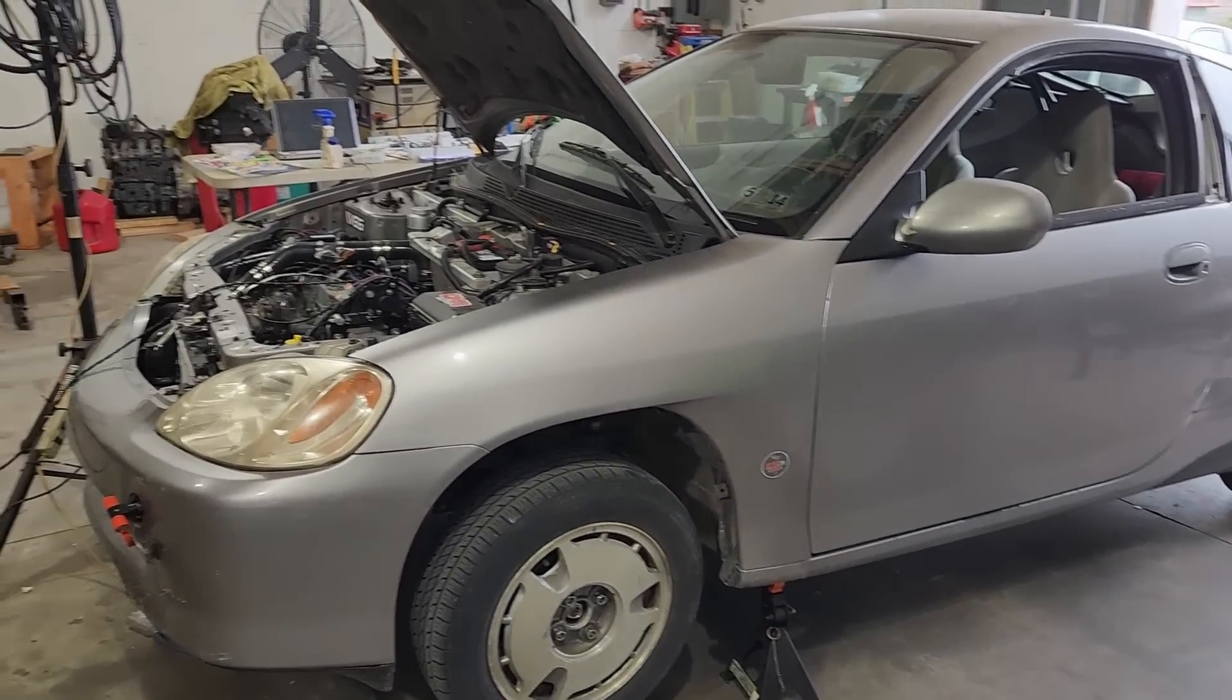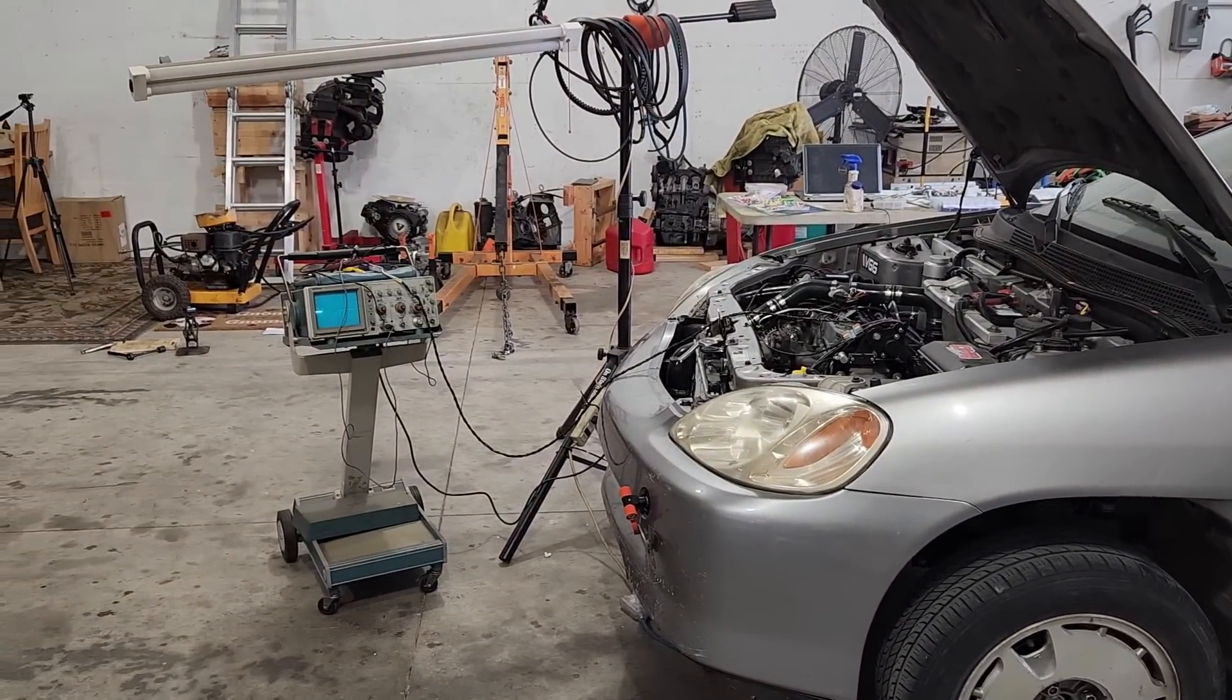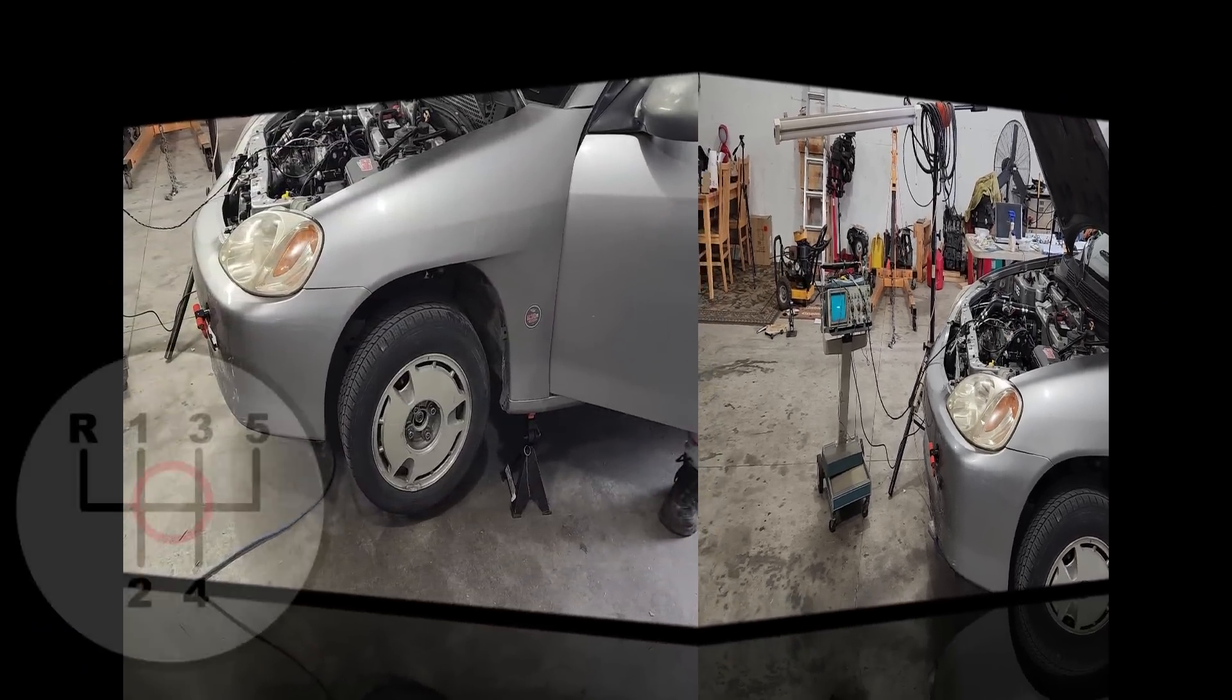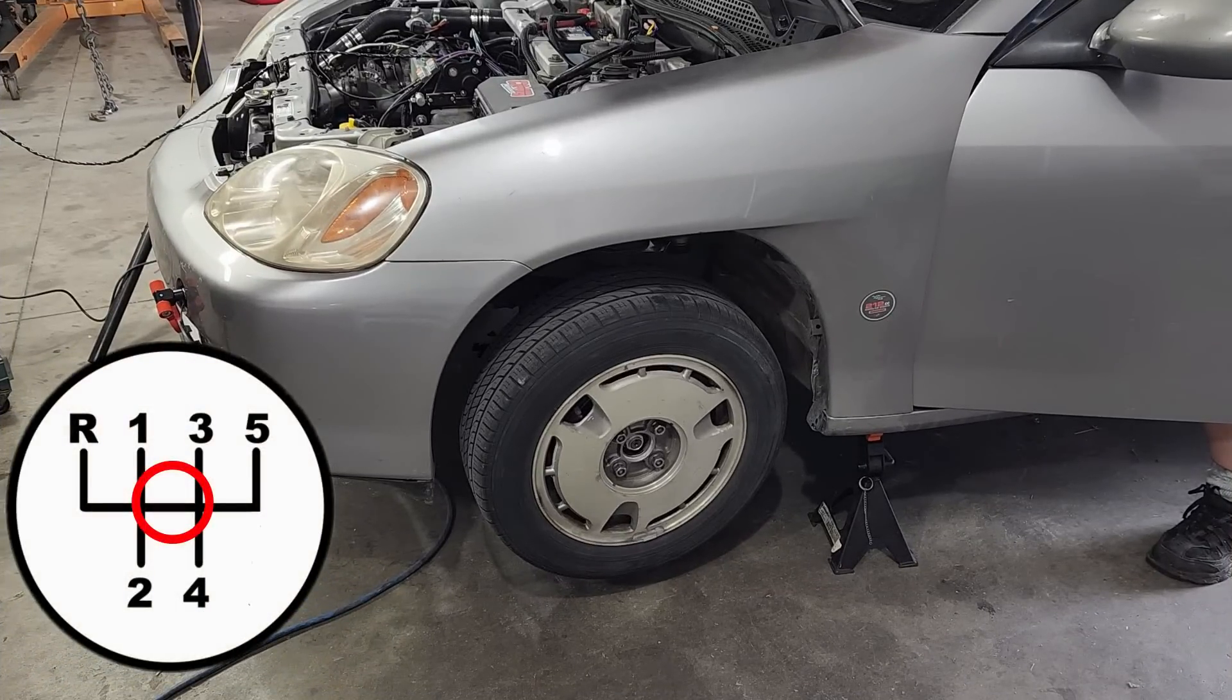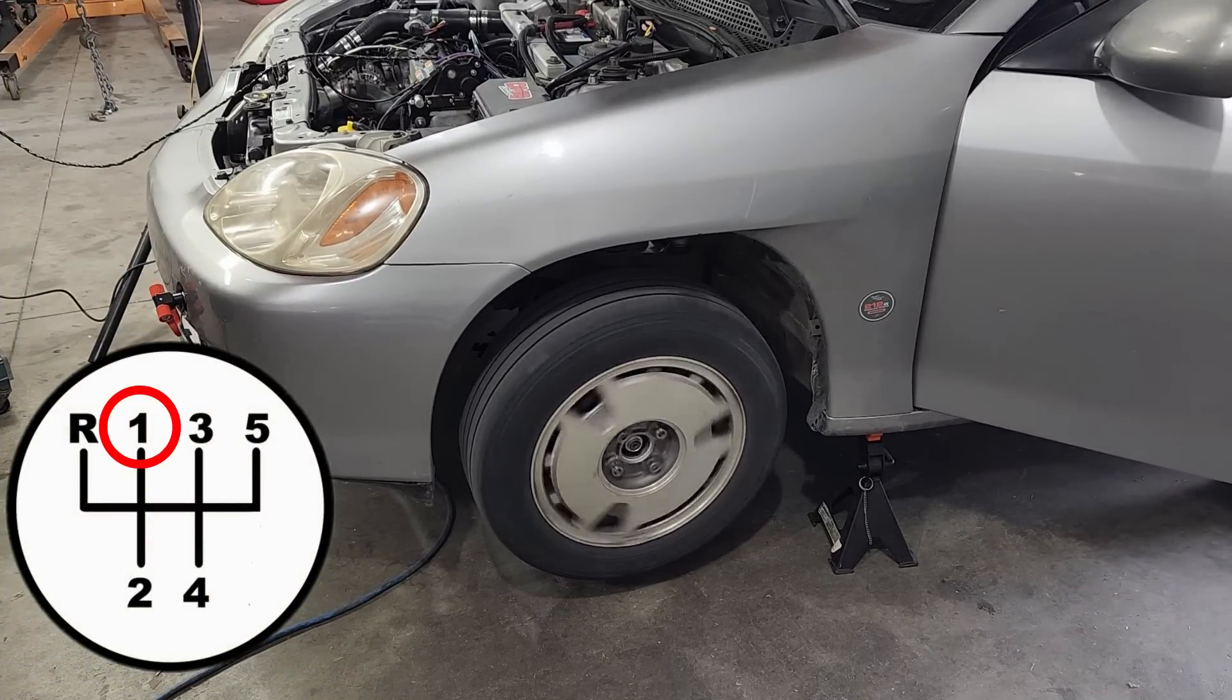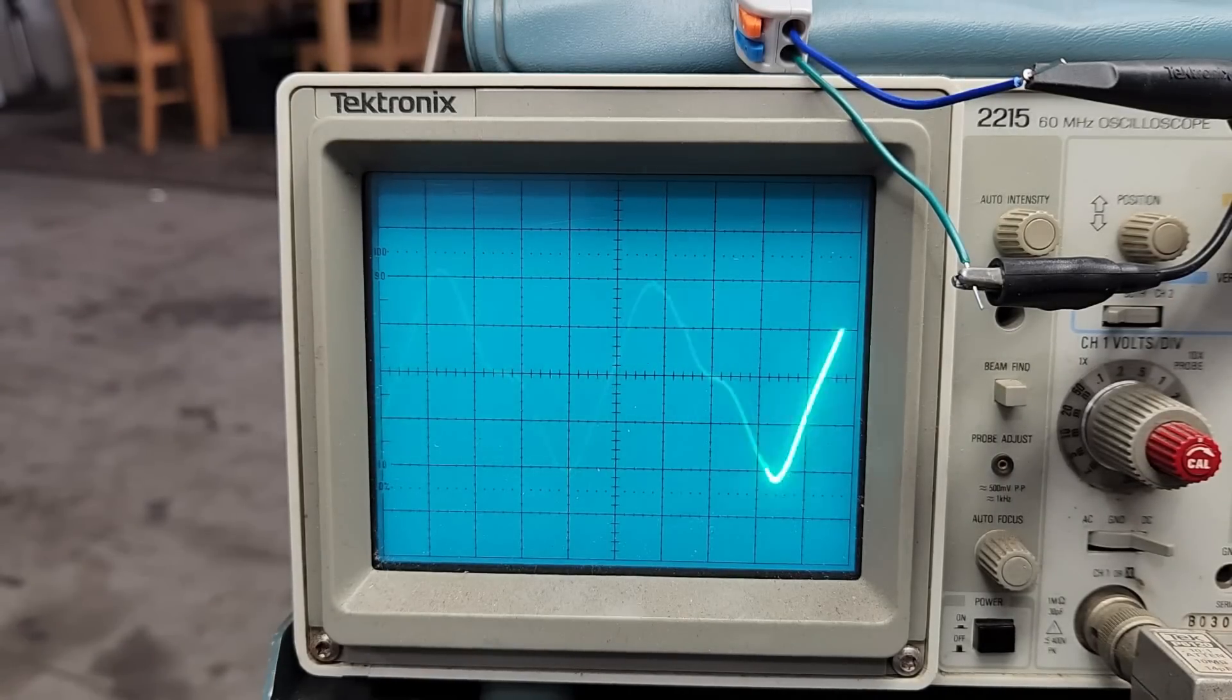So I have the car up on jack stands, and the wires for the vehicle speed sensor have been extended so they reach the oscilloscope. Let's look at the raw signal from the sensor. Yup, the signal from the VR sensor is definitely a sine wave. It's not a perfect sine wave like I expected, but it's a sine wave nonetheless.